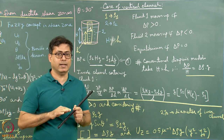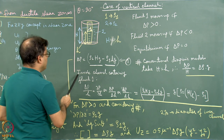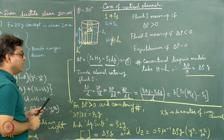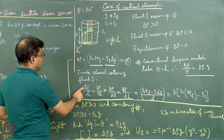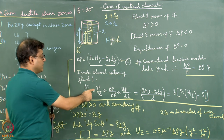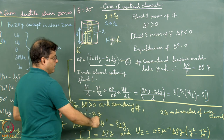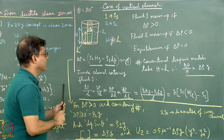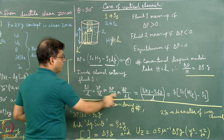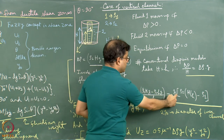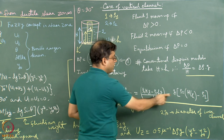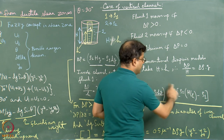They are exerting equal pressure, so they are in a stable condition. Now, the pressure gradient inside the channel containing fluid 1 is given by the pressure difference divided by h, the height. This can be written as del p/del h, delta p/delta h, or dp/dh — all meaning effectively the same thing. It is given by (rho2 × H × g − rho1 × h × g) divided by small h.